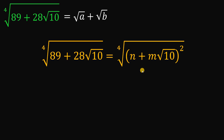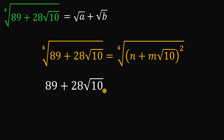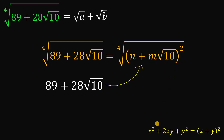Here's the process. We have 89 plus 28 times square root of 10, and to write it in the form (n plus m times square root of 10) squared, we use the perfect square trinomial concept: x squared plus 2xy plus y squared factors nicely as (x plus y) squared. We have two terms here, so we'll apply that concept.